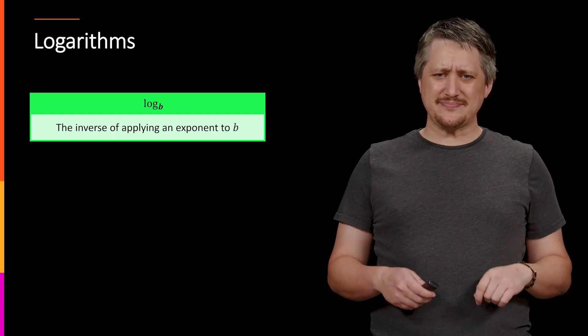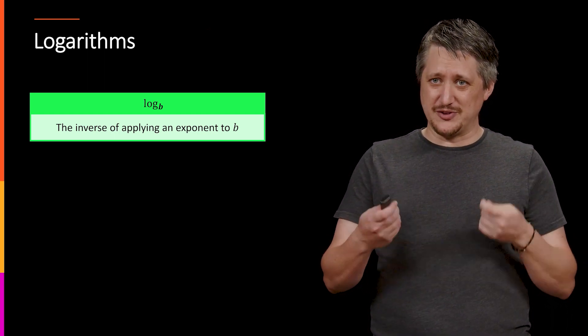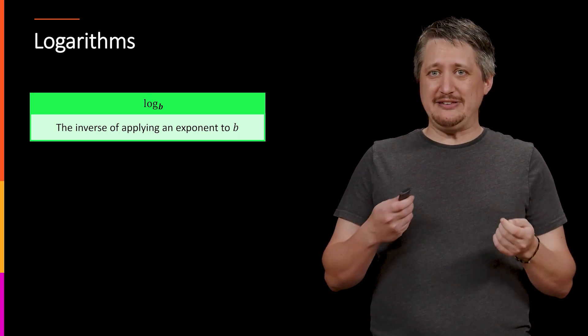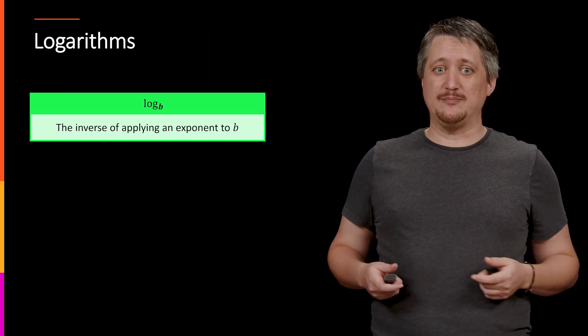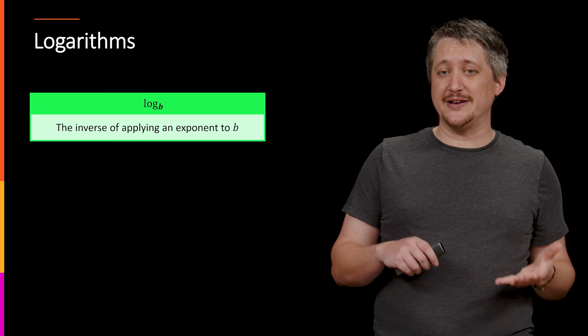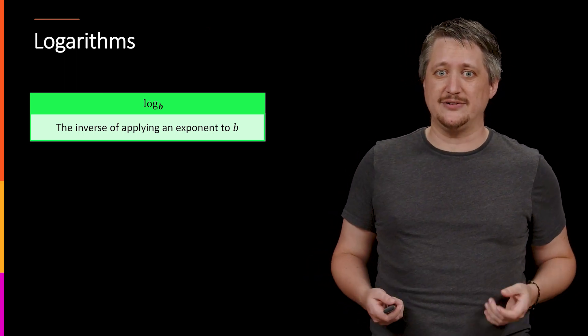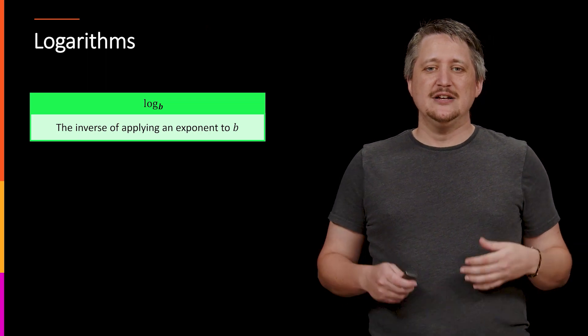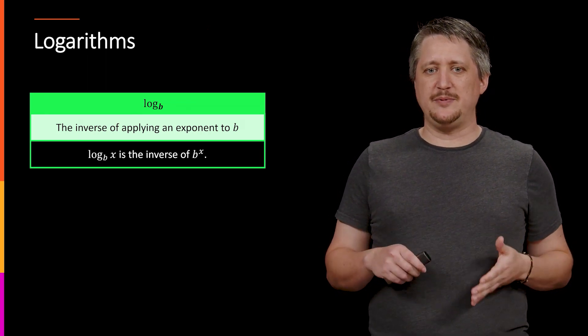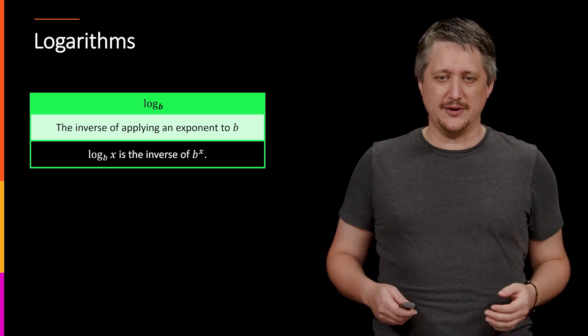So, log base b, what this is supposed to represent is the inverse, the property of inverting that exponentiation step. So the log base b is the inverse of applying an exponent to some base b, right? That b there is sort of not an accident in both places. So in particular, if we have log base b of x, that's the inverse of b to the x.